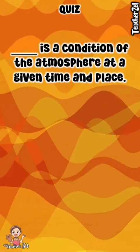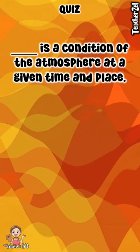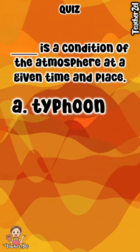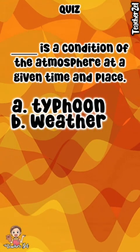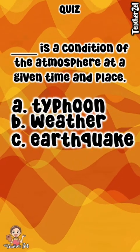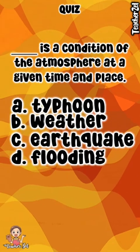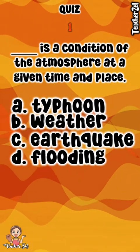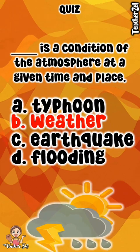Blank is a condition of the atmosphere at a given time and place. A. Typhoon. B. Weather. C. Earthquake. D. Flooding. The answer is B. Weather.